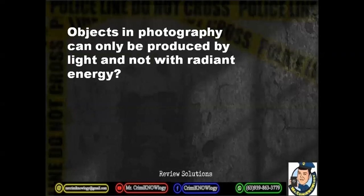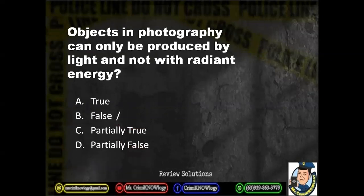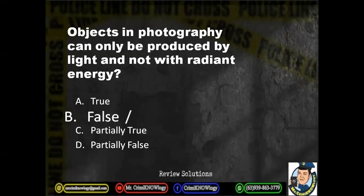Objects in photography can only be produced by light and not with radiant energy? A. True. B. False. C. Partially true. D. Partially false. The correct answer is letter B — false. Photography can be produced by light but can also be produced using radiant energy. Even radiant energies such as UV light, X-rays, and gamma rays can be used as mediums.